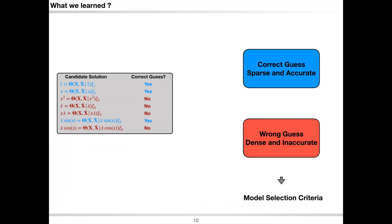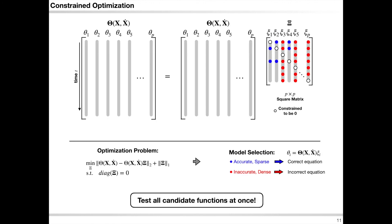This testing procedure is highly parallelizable since each sparse regression problem is independent. Thus, we could use computational toolboxes to speed up this computation — that's why we call it SINDy-Pi, where Pi stands for parallel and implicit. You are more likely to generate a sparse model with low prediction error on the test data when you make a correct guess. Conversely, you will end up with a dense model with high prediction error when you make a wrong guess. This can be used as our model selection criteria. Moreover, we could rewrite the individual sparse regression problems as a constrained optimization problem that tests all candidate terms at once.